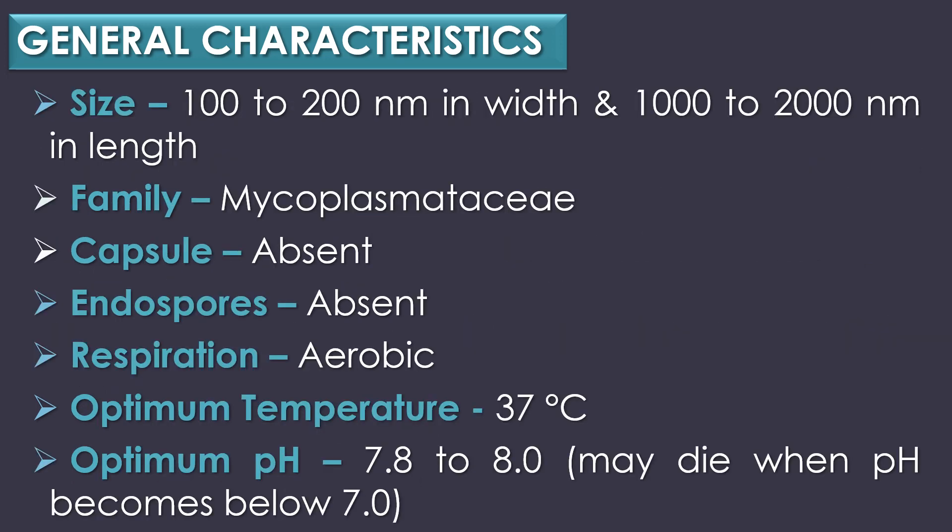The size of Mycoplasma pneumoniae ranges from 100 to 200 nanometers in width and 1000 to 2000 nanometers in length. Mycoplasma belongs to the family Mycoplasmataceae; capsules are absent and endospores are absent. The mode of respiration is aerobic, the optimum temperature for growth is 37 degrees Celsius, and the optimum pH is 7.8 to 8. Mycoplasma pneumoniae may die when pH becomes below 7.